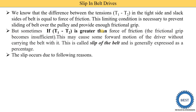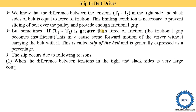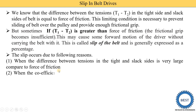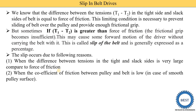Slip occurs due to the following reasons. The first reason, which we already discussed, is when the difference between the tension in the tight side and the slack side is very large compared to the force of friction — that is, T1 minus T2 is greater than the force of friction. The second reason is when the coefficient of friction between the pulley and the belt is low, in the case of a smooth pulley surface. When the pulley surface is very smooth, the pulley rotates but the belt does not — this is called slip due to low coefficient of friction.